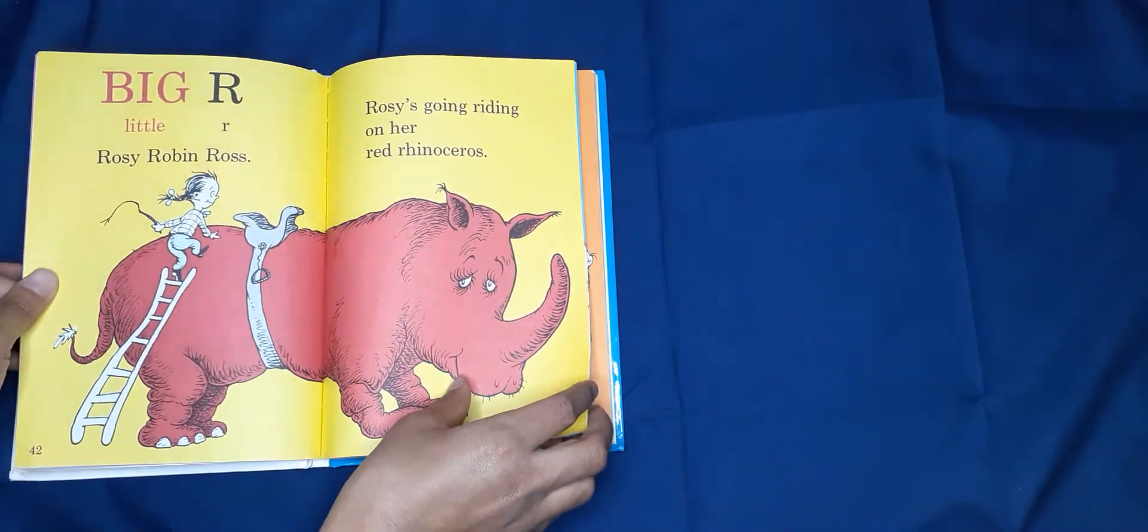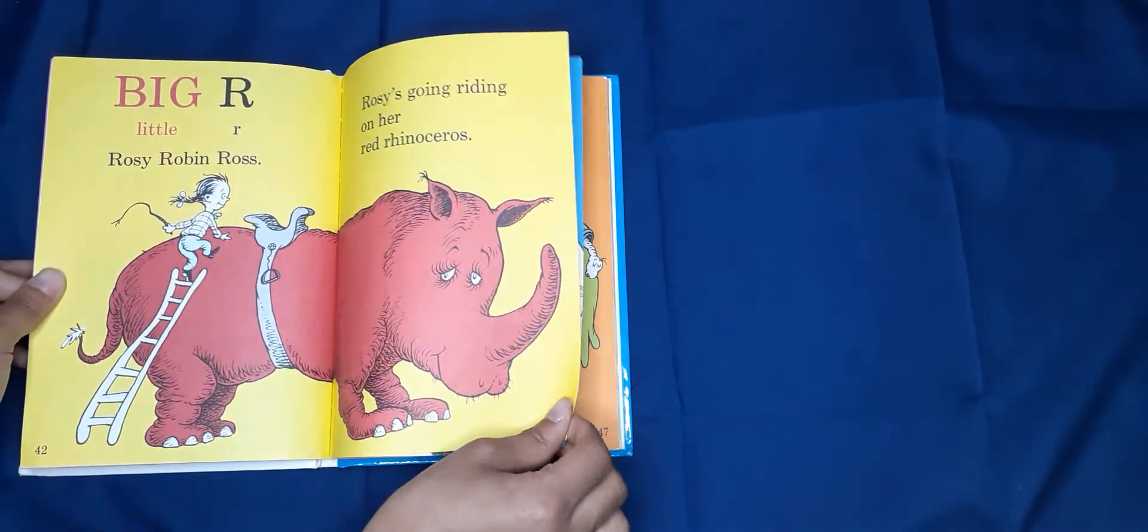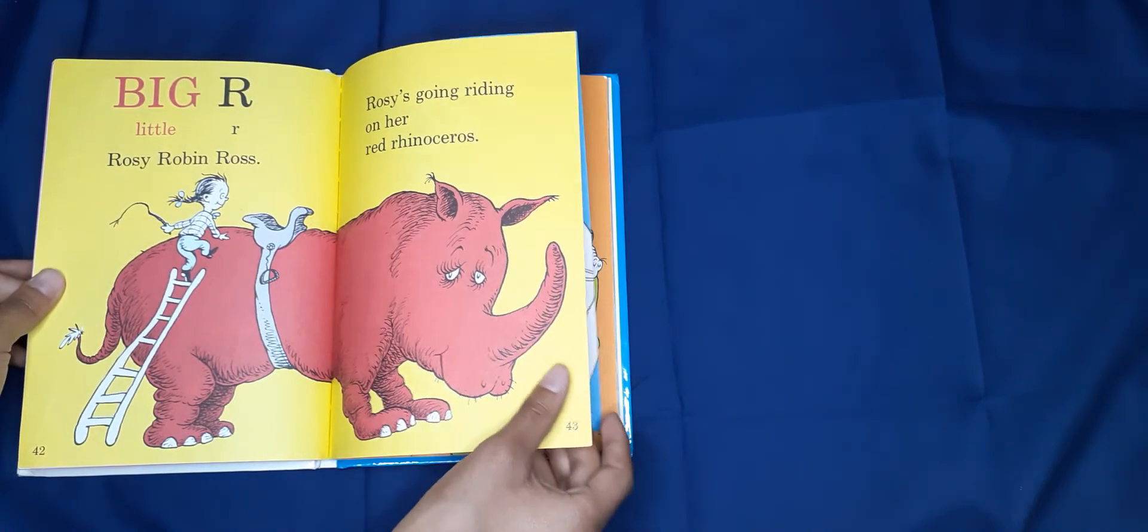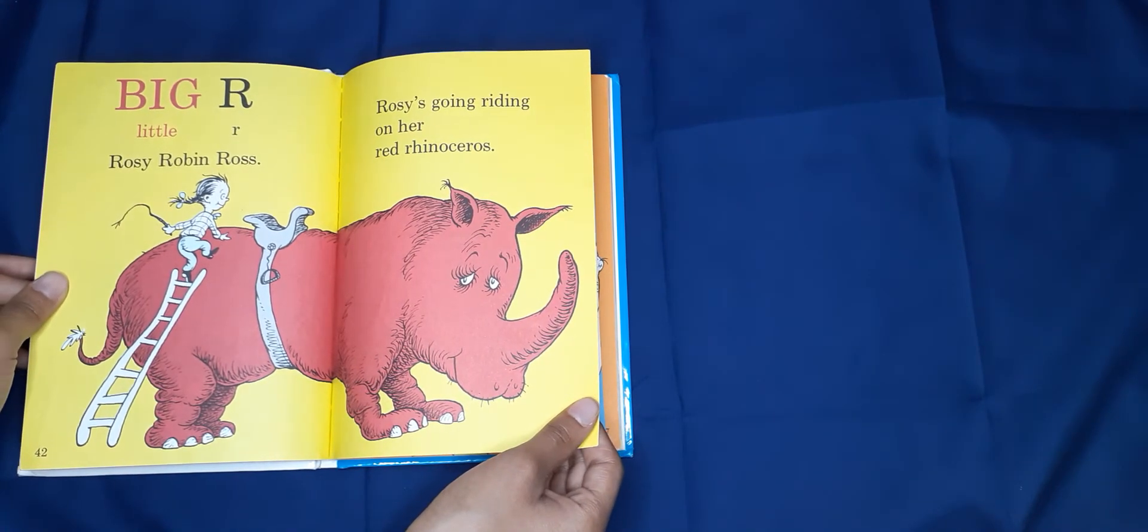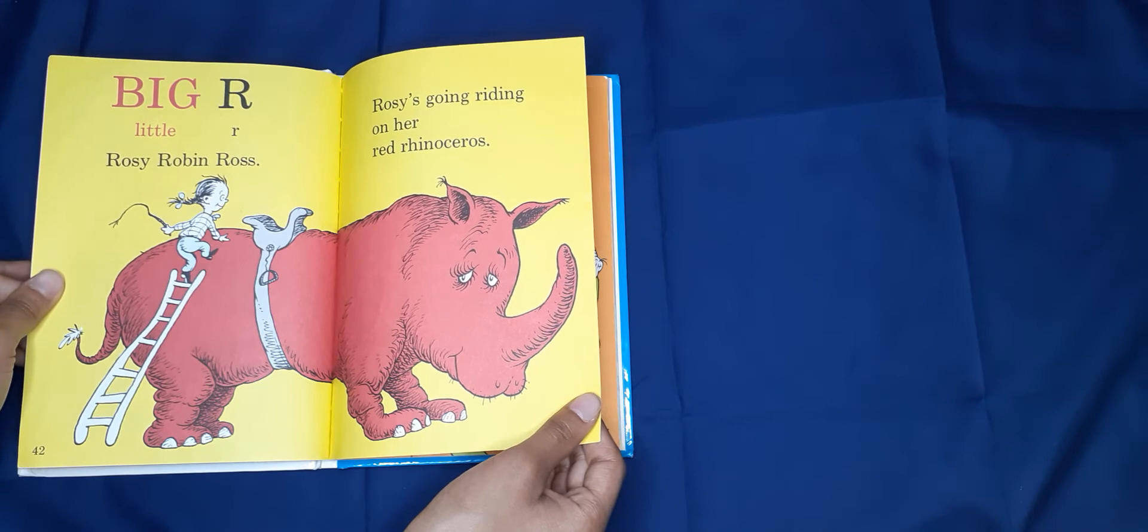Big R, Little R. Rosie Robin Ross. Rosie's going riding on her red rhinoceros.